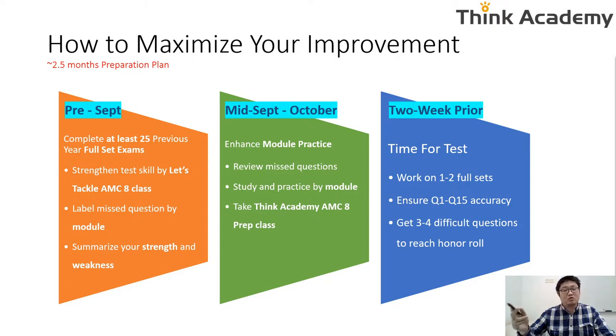For the time of the test, two weeks before you're going to do one or two tests just to make sure you're in that zone. Work on one or two full sets and ensure that from question 1 to 15, there's no missed question. If you miss any one of them, take them seriously. Do not say I'm just getting careless, I'll get it right next time, or this is just a calculation problem that doesn't count. Do not have those thoughts. Get three to four difficult questions to reach honor roll. You only need three to four difficult questions to reach honor roll. If you get the 15 questions right, all you need is to score three to four questions in the next 10 questions to receive 18 to 19 points. That's already money in the bank—you just need to grab it and the honor roll is yours.